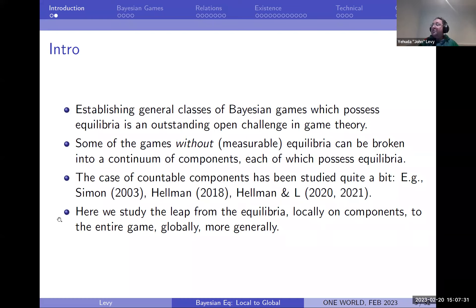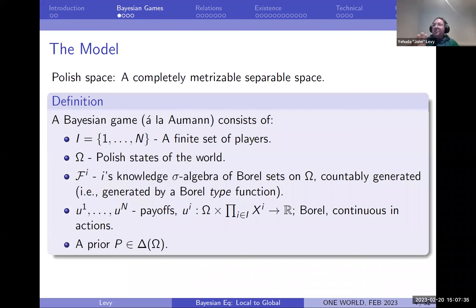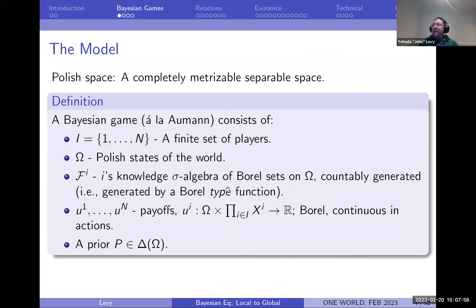This paper is going to discuss that jump from components to the global in a more general framework where we don't assume that each component is countable. Just to be clear on what we're talking about: Bayesian games in the Aumann sense have a finite set of players and some set of states of the world, which we assume to be a Polish space — a completely metrizable separable space.